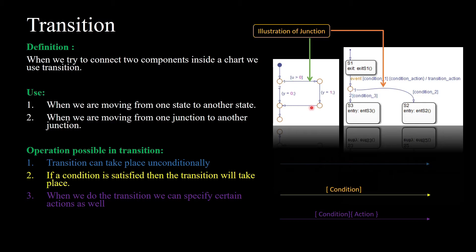In stateflow, if we are trying to define one unconditional path from one state to another — say from state A to state B — we can have only one unconditional transition from state A to state B. Otherwise there is confusion. If we use two unconditional transitions from state A to state B with no conditions, the state chart will get confused about which one to follow.